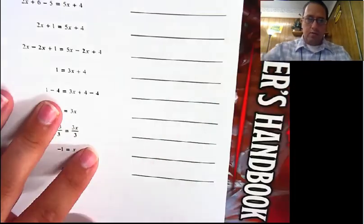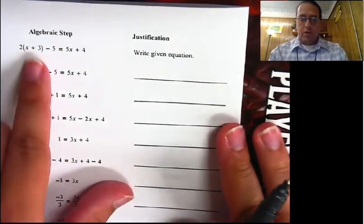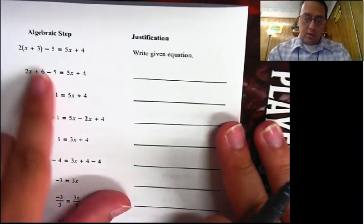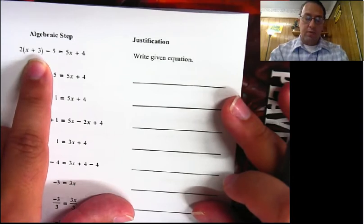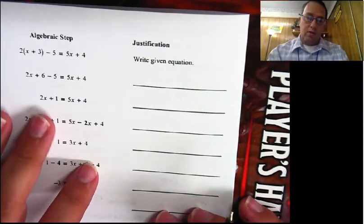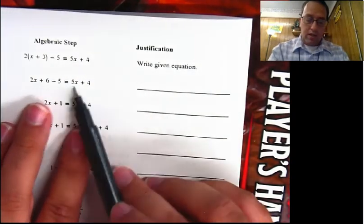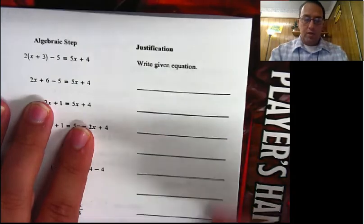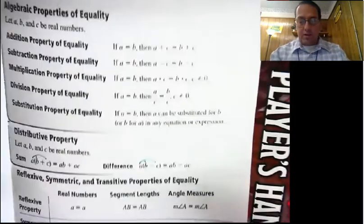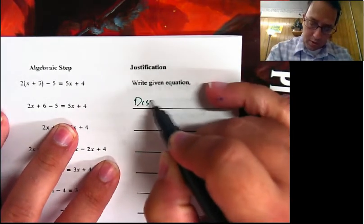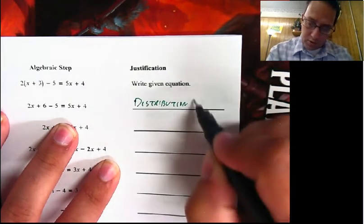Let's take a look at this example. We're going to solve this equation step by step and write our justification for each step. We start off with 2 times (x plus 3) minus 5 equals 5x plus 4. That's the equation we're given. The next line distributes the 2 into the parentheses, and how do we know we're allowed to do that? Because we have the distributive property.